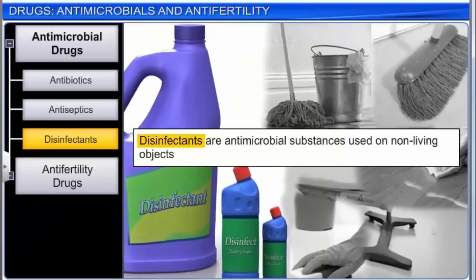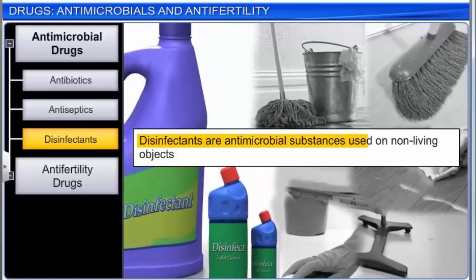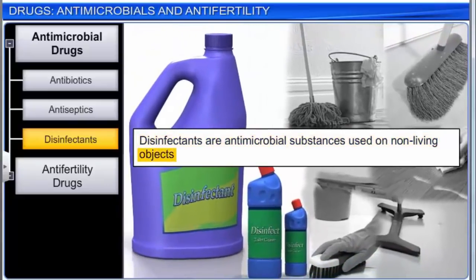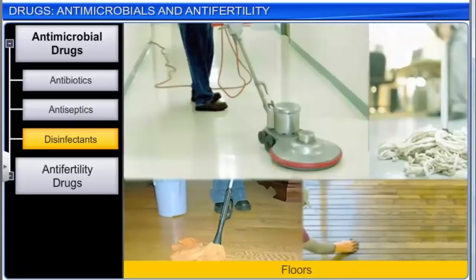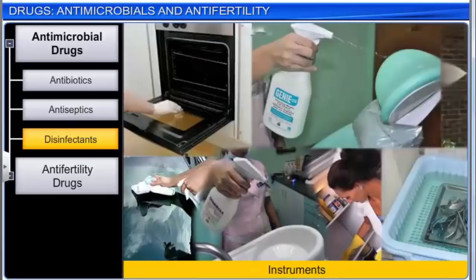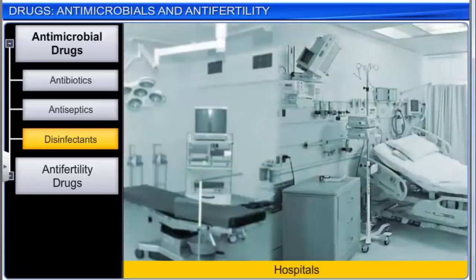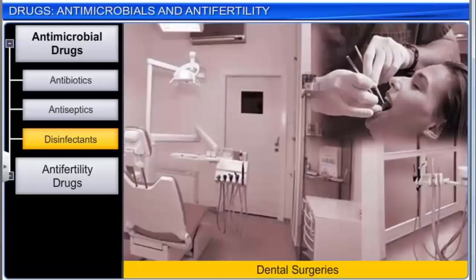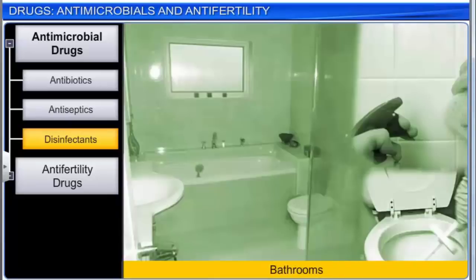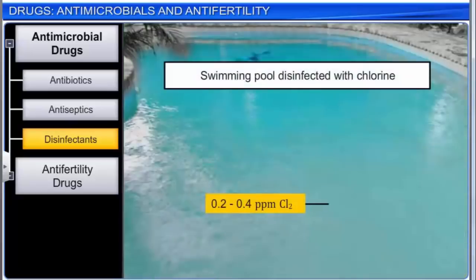Disinfectants are antimicrobial substances used on non-living objects such as floors, drainage systems, and instruments. They are frequently used in hospitals, dental surgeries, kitchens, and bathrooms to kill infectious organisms. Chlorine at a concentration of 0.2 to 0.4 parts per million in aqueous solution is used as a disinfectant. Similarly, a sodium hypochlorite solution is used to disinfect drains and toilets.